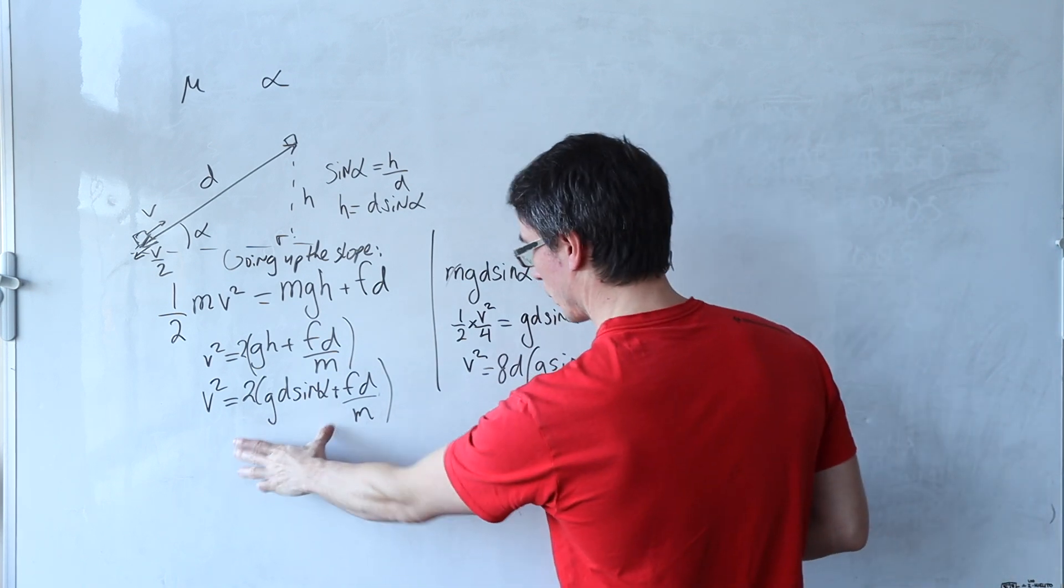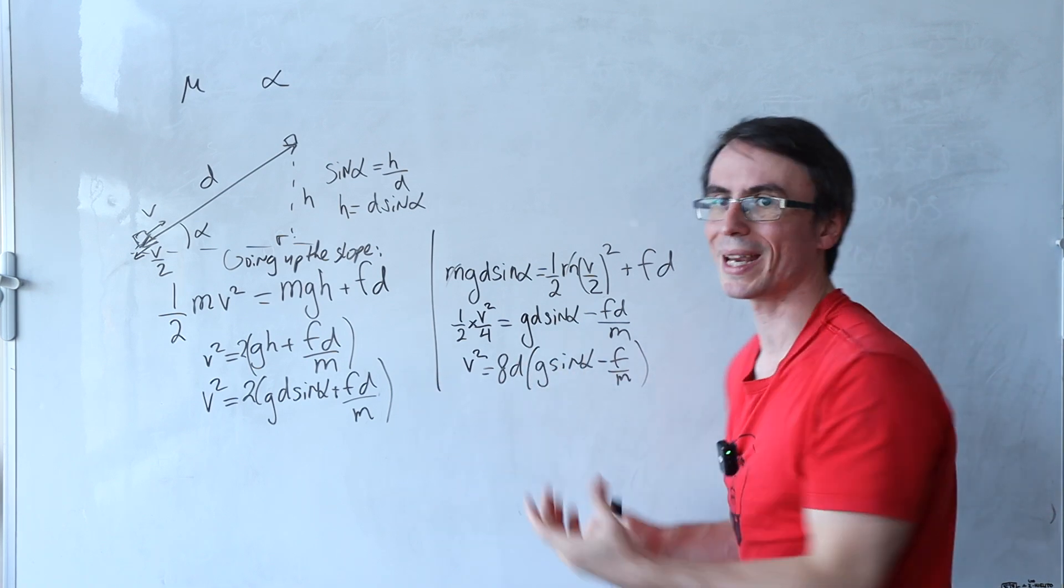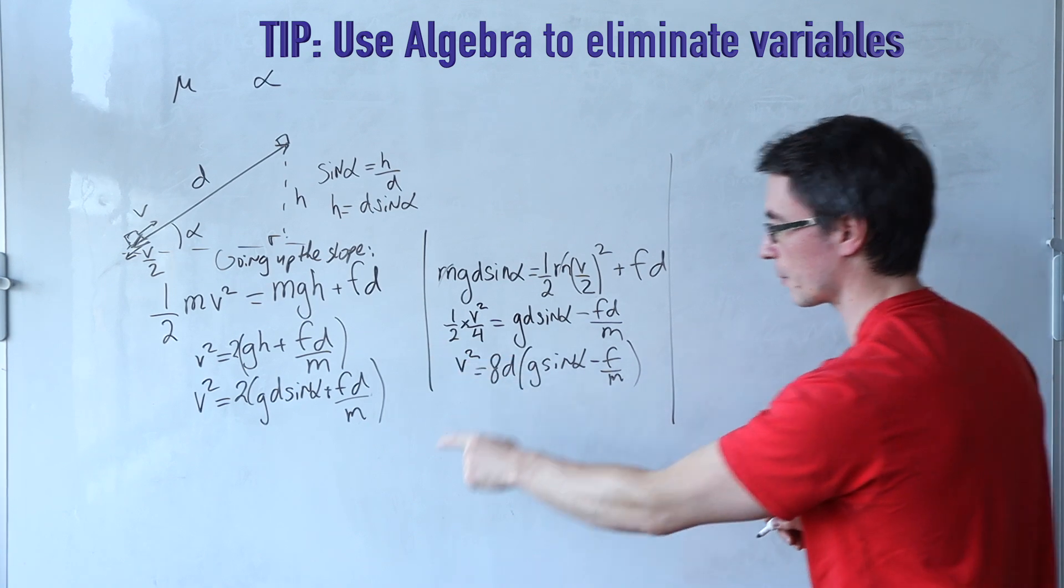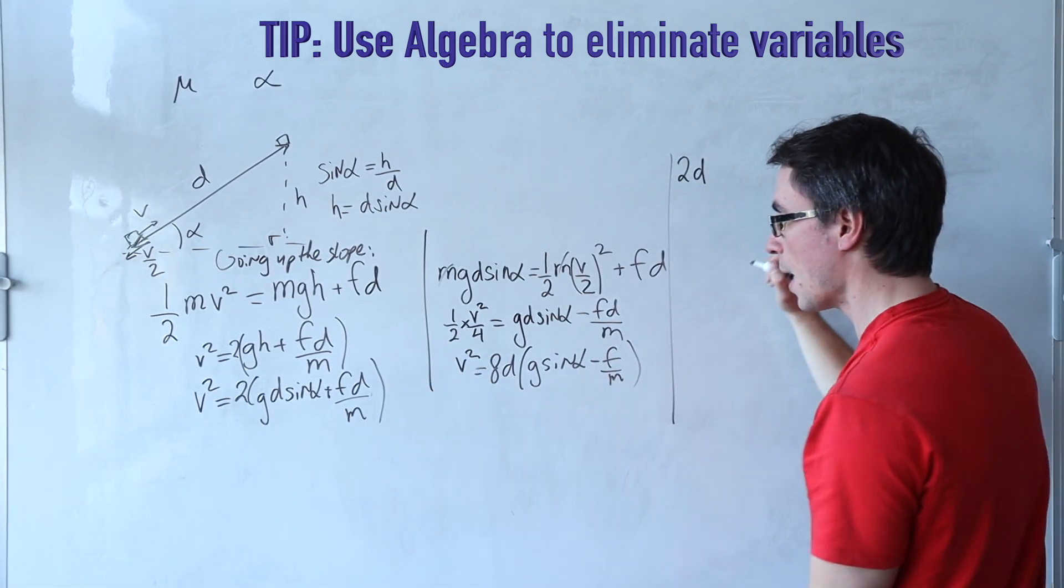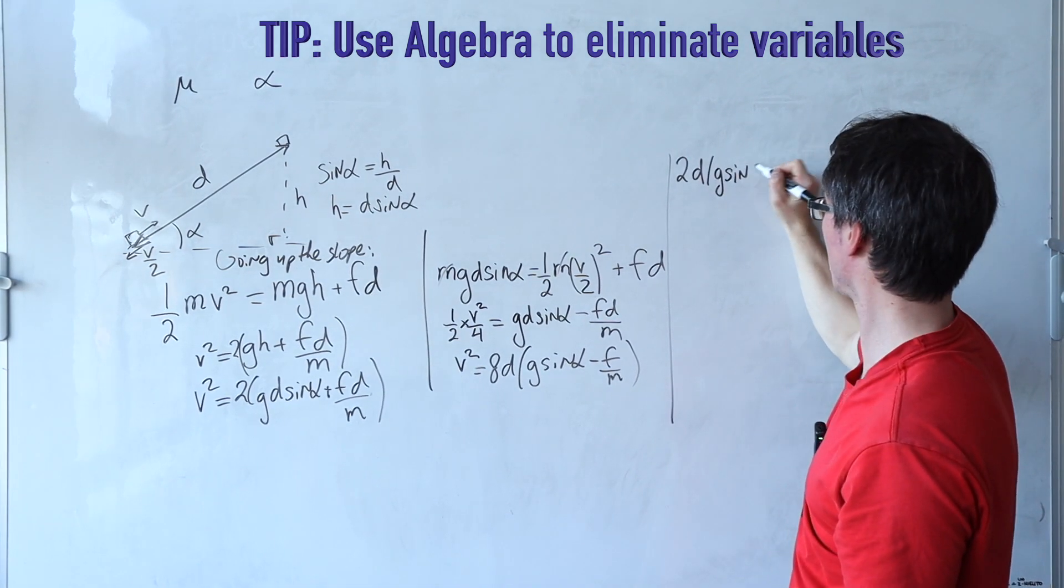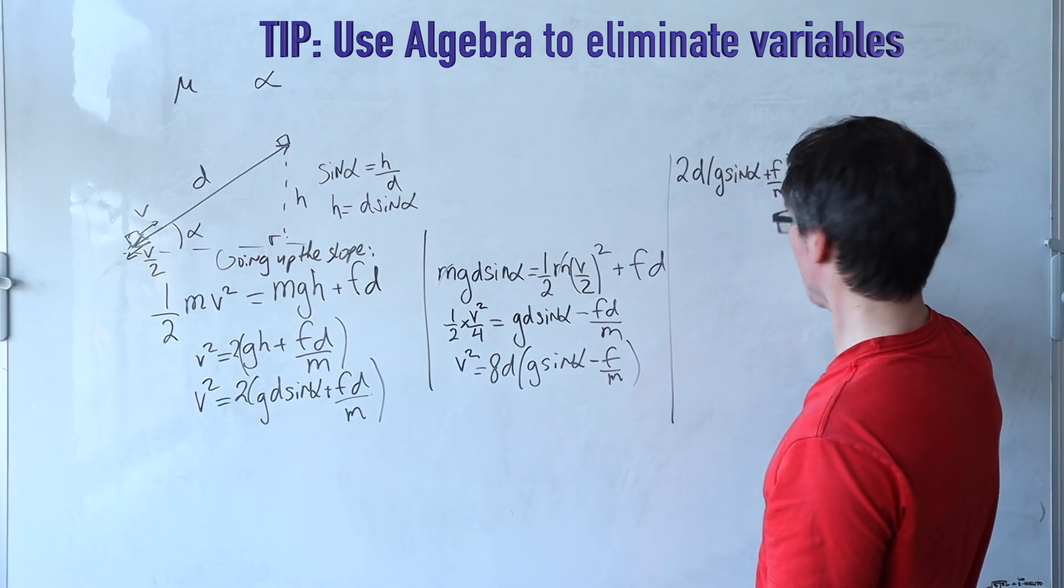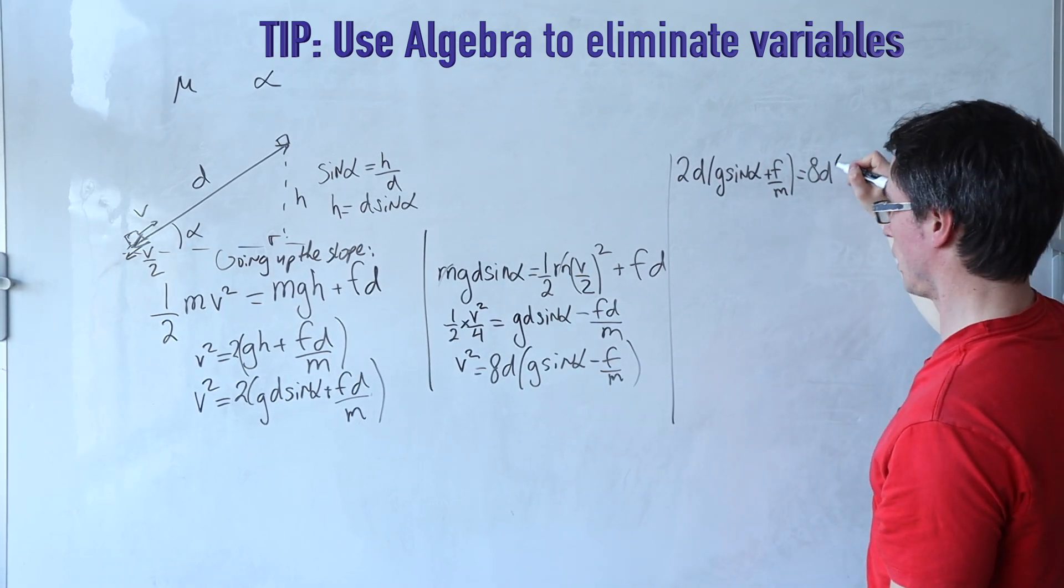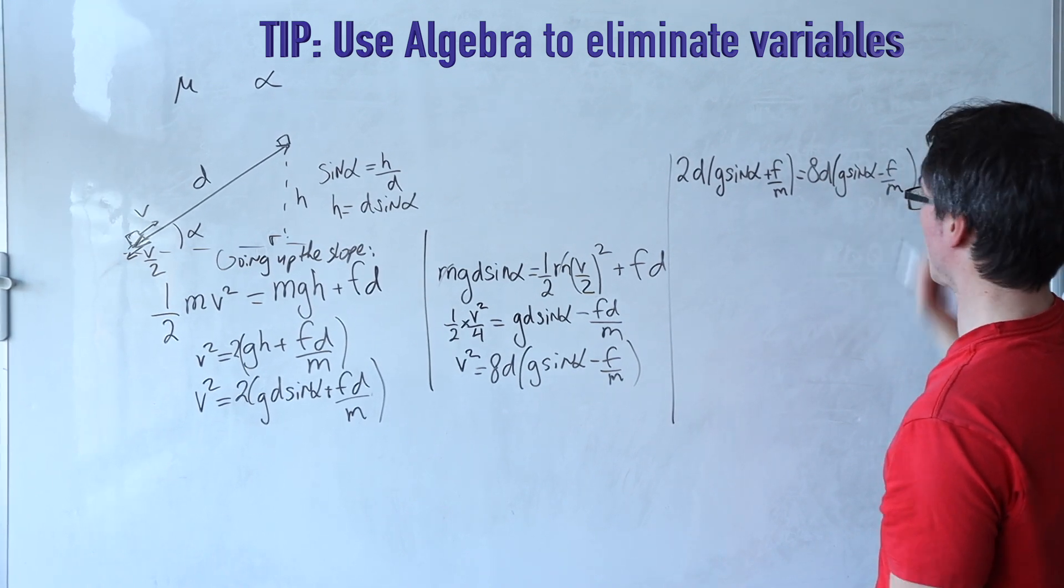Okay, now I've got two equations for v squared here and then here. I can set those two equations equal to one another. So what we're going to get is, let's take a factor of d outside of this, we're going to get the 2d and then inside of the brackets we're going to get g sine of alpha plus f over m is equal to 8d and then we have g sine of alpha take away f over m.